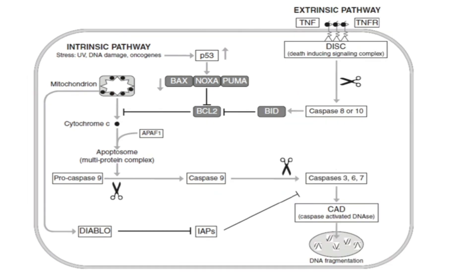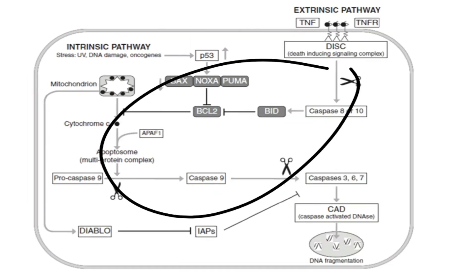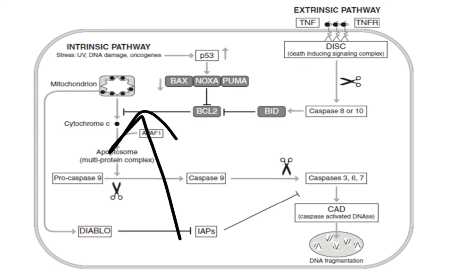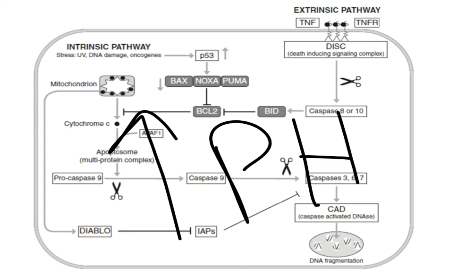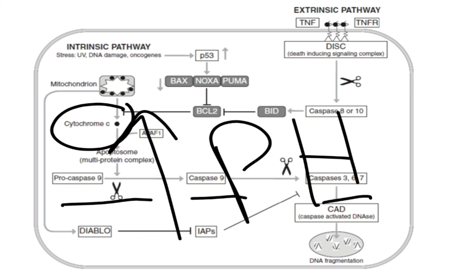How do cancer cells avoid this programmed cell death? Cancer cells increase the internal pH of the cell from 7.2 to 7.5. When pH increases, the activity of cytochrome C decreases. Even if cytochrome C is now in the cytoplasm, its activity is near zero and it doesn't activate caspases, and thus there is no apoptosis.